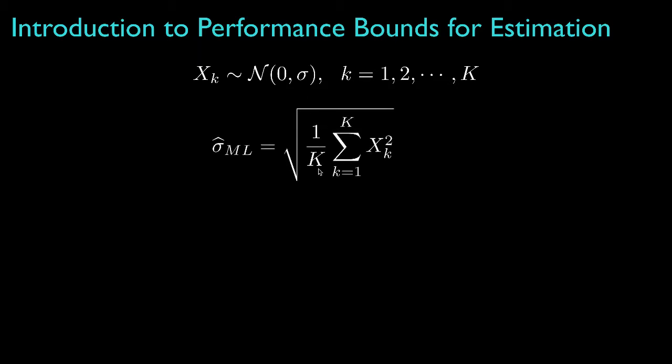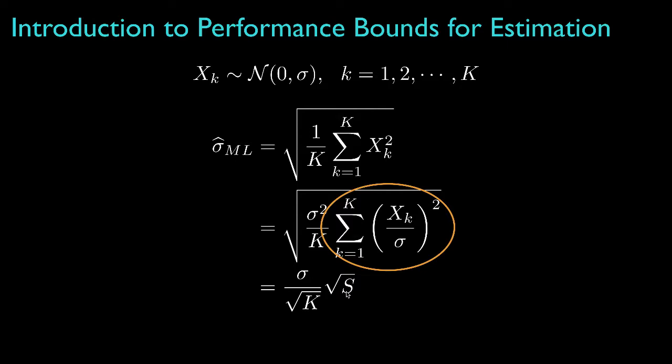The maximum likelihood estimator for sigma is the square root of the sample variance, which, if we normalize each sample by its standard deviation, can be written in terms of the square root of a chi-squared random variable s, which is the sum of the squares of k independent zero mean Gaussian random variables, each of which has been normalized to have unit variance.